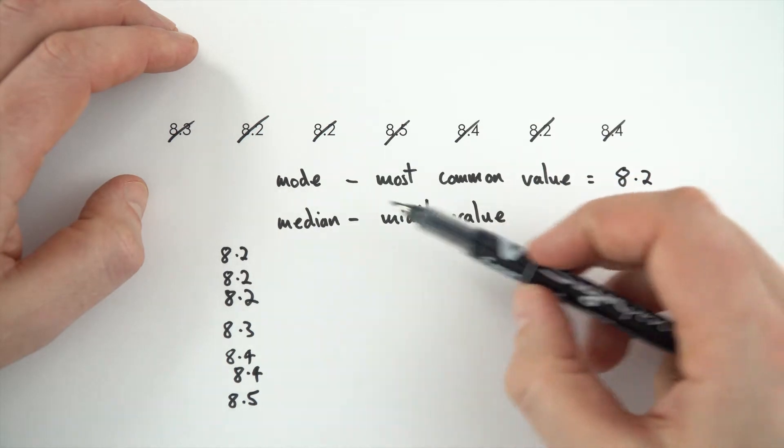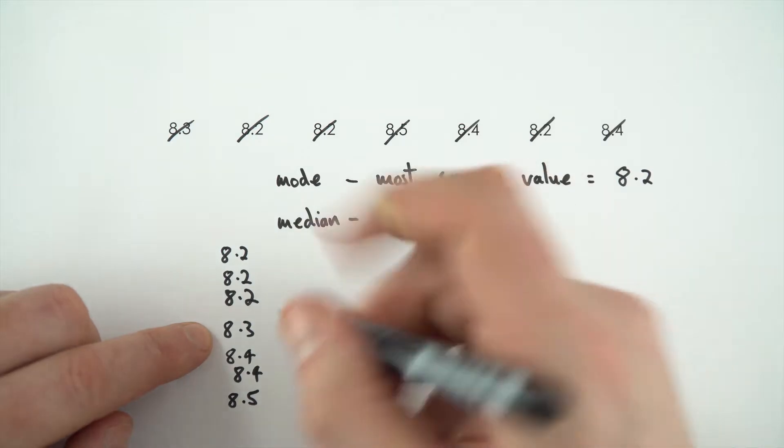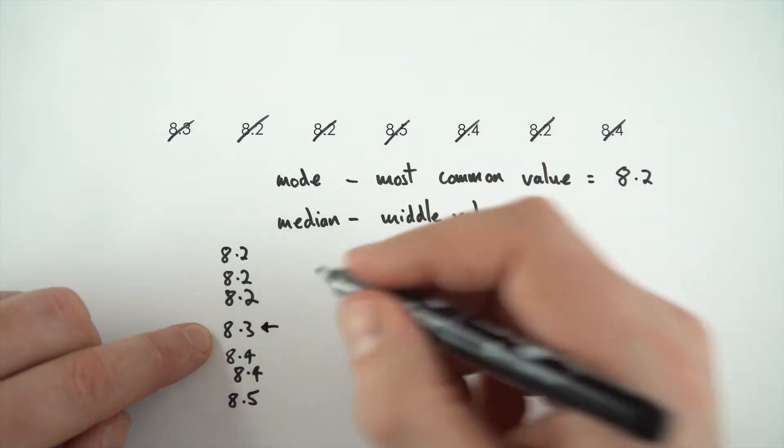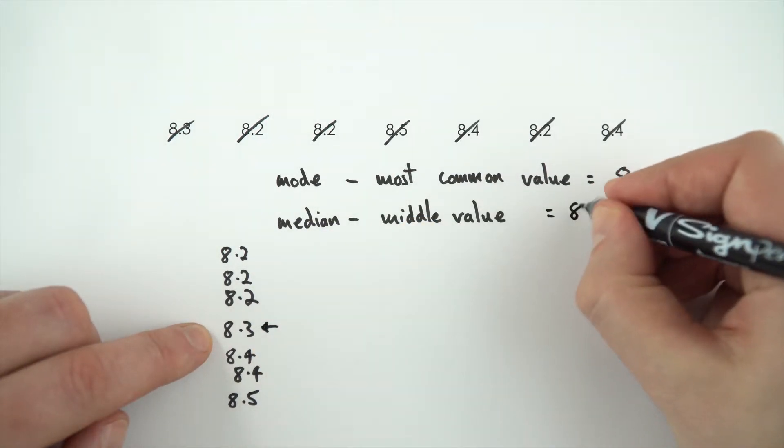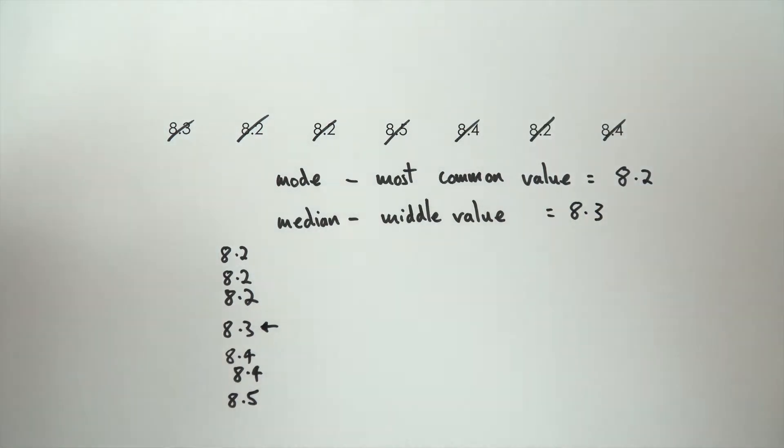Now the middle value is the median, and the middle value out of these seven numbers is this one here, because it comes halfway through the list. So this means the middle value is 8.3 for the median. Pretty straightforward.